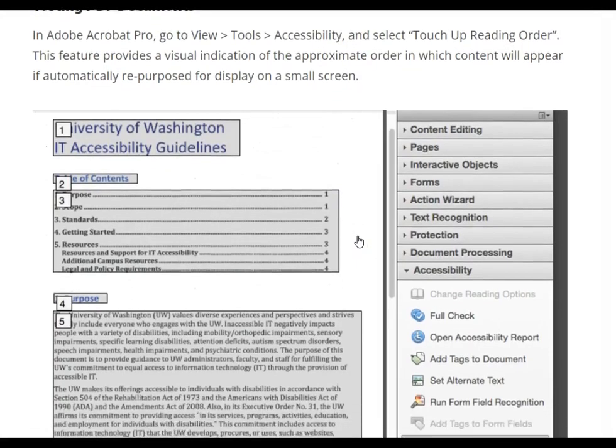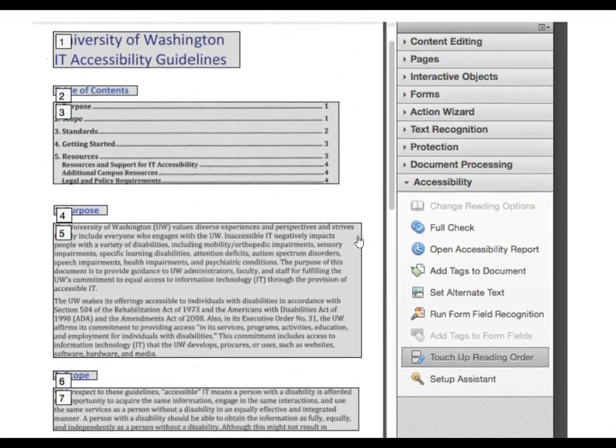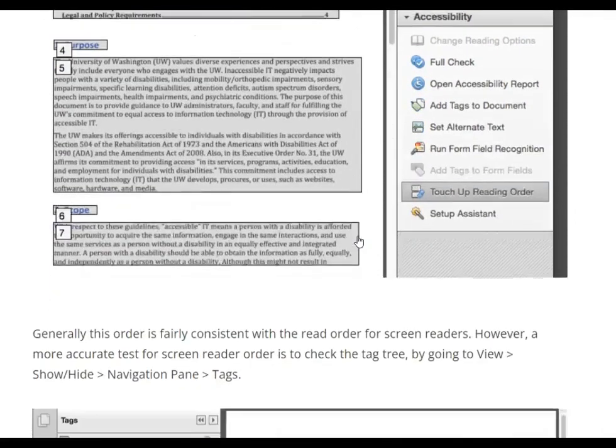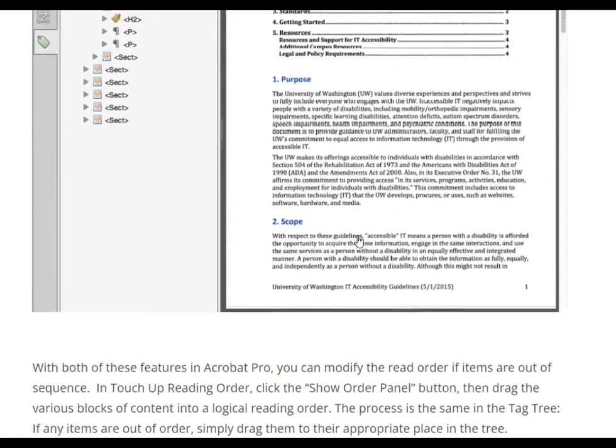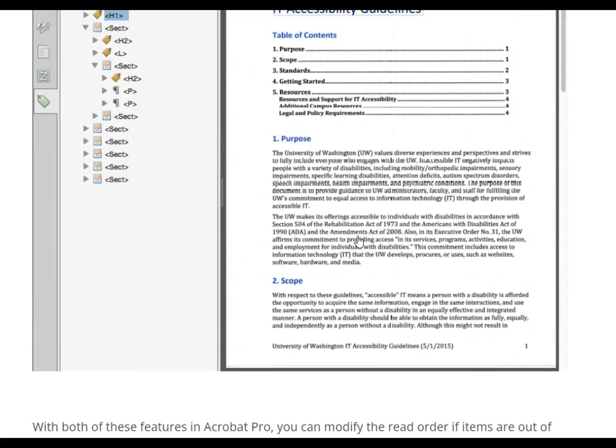Alternatively, you can use Adobe Acrobat Pro to check its accessibility. If you don't have the original PDF document or the Pro version of the software, the best practice is to make a Canvas page with the actual content in it, being mindful of copyright issues, of course.